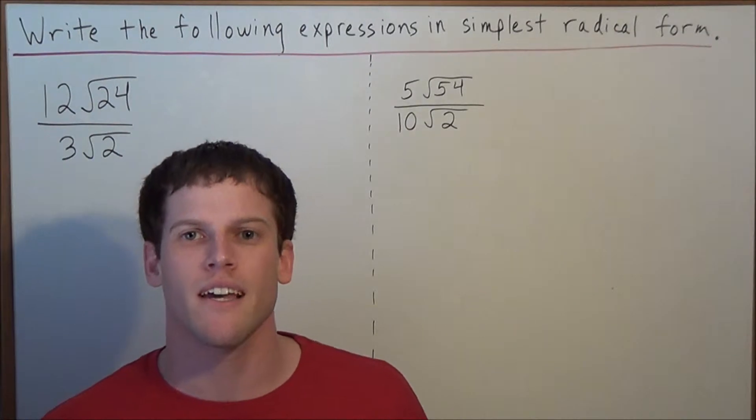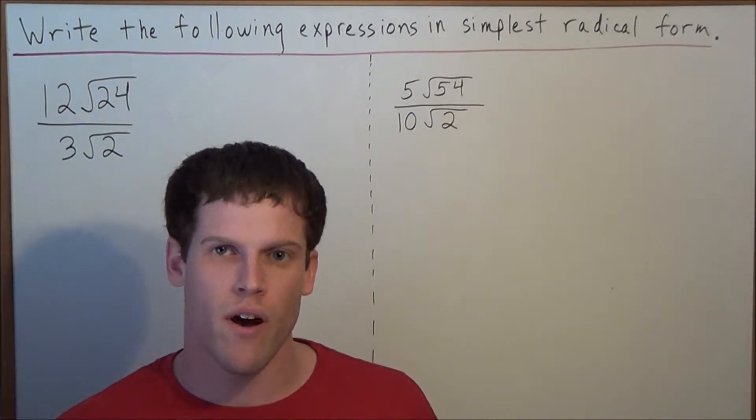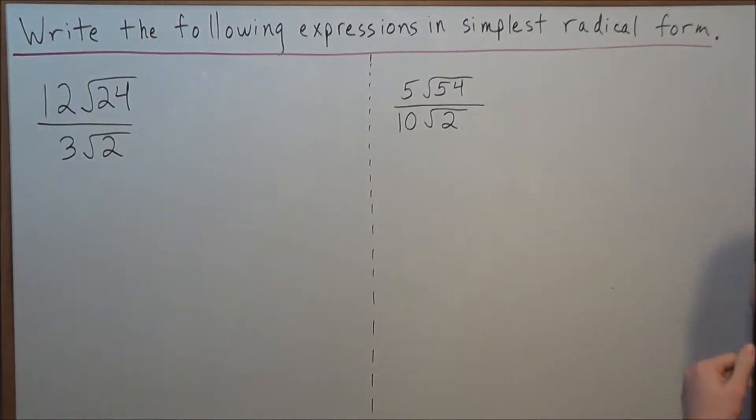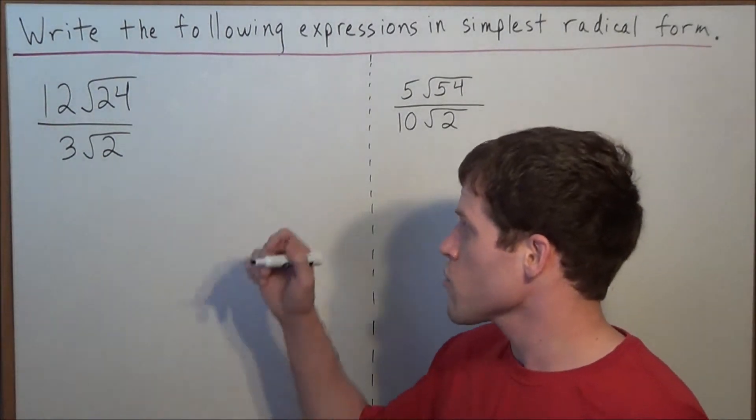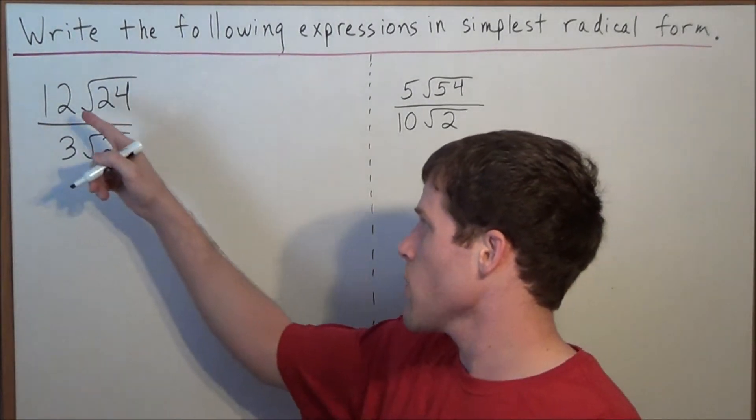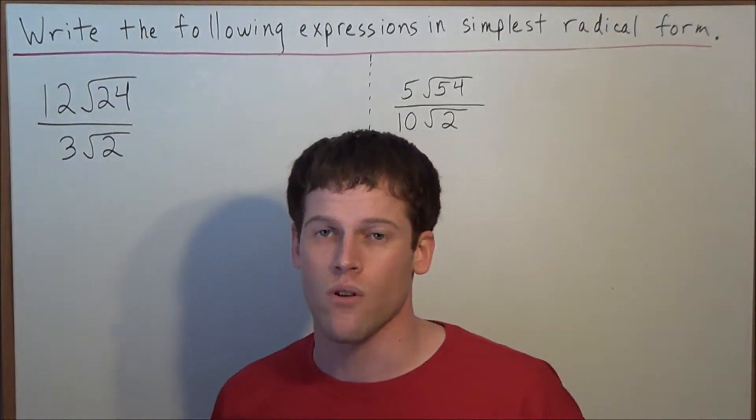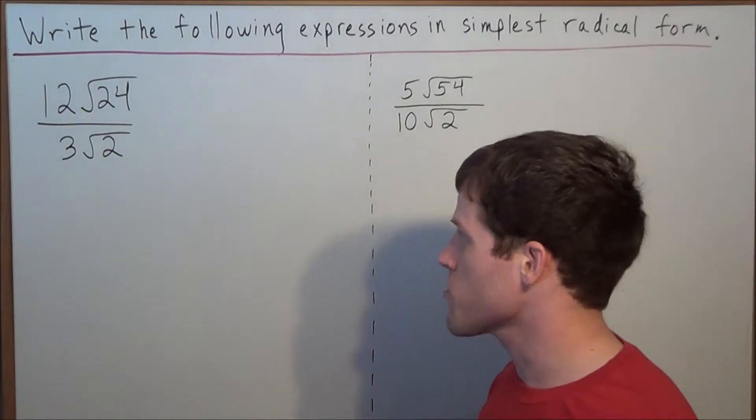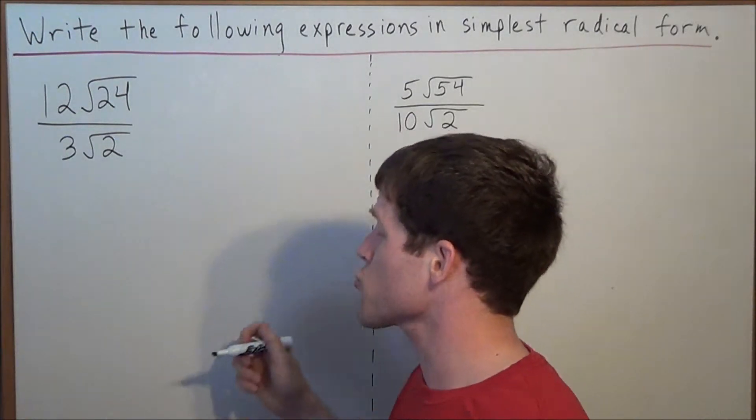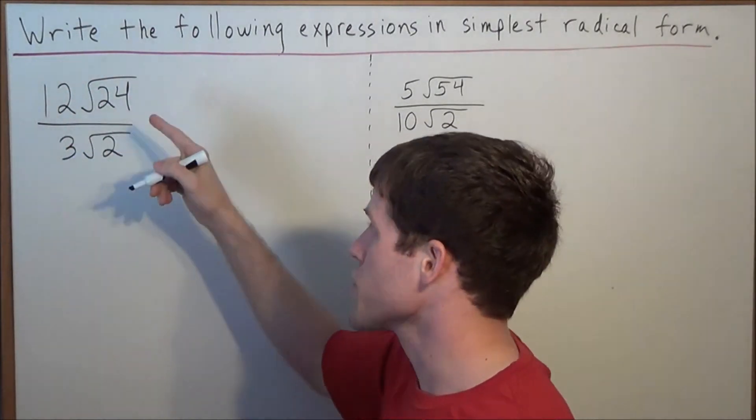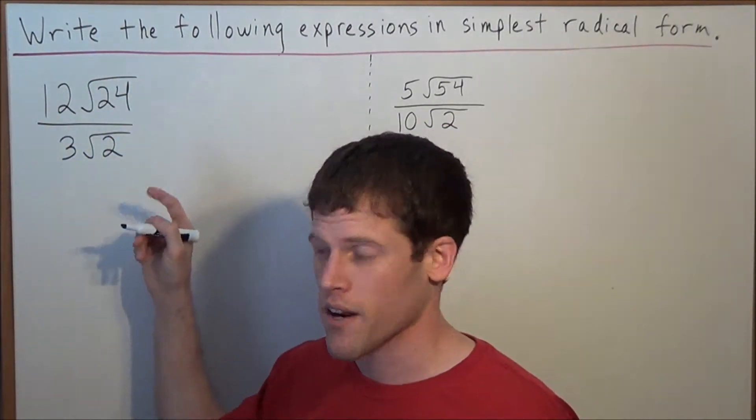Hi, my name is Mr. D and today I want to take a look at how to divide radical expressions. So we have write the following expressions in simplest radical form. We'll start with the first example. We have 12 radical 24 divided by 3 radical 2. Now when we're dividing radical expressions, to keep this simple, just remember that you're going to divide the numbers outside the radicals and you're going to divide the numbers inside the radicals.